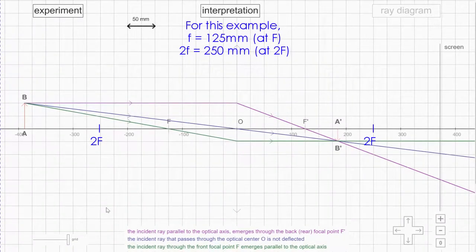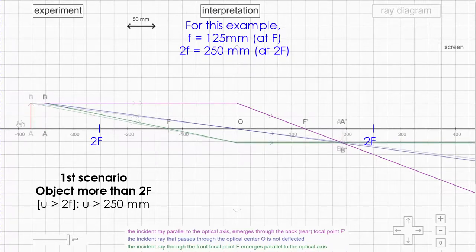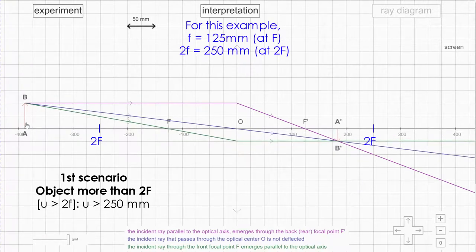In this video we're going to go through the four scenarios which are critical. The first one is when the object is more than 2f, meaning two times the focal length. As we mentioned, the 2f is 250mm, so this object is more than 2f, two times the focal length.